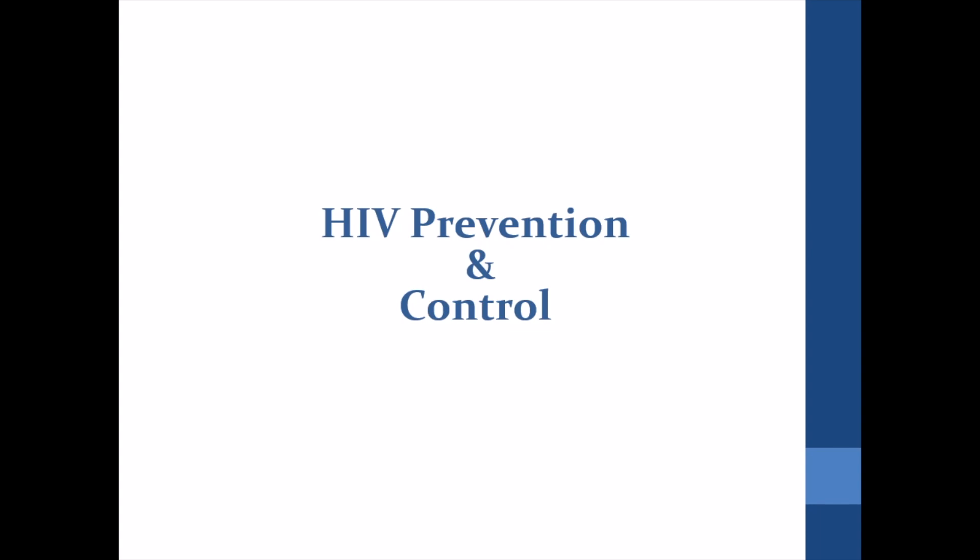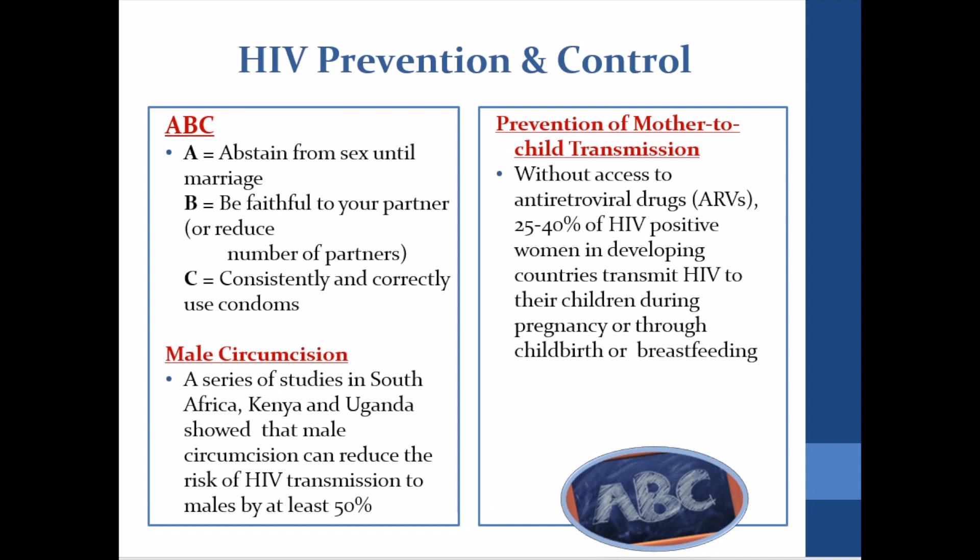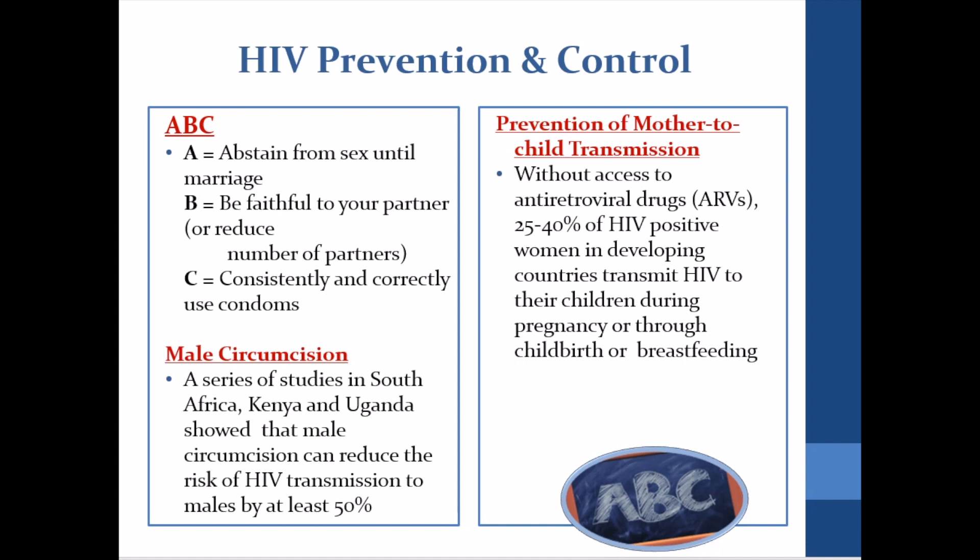HIV prevention and control: since HIV cannot be cured, the best thing is to prevent it. Here are some ways to prevent and control HIV: abstinence, male circumcision, prevention of mother-to-child transmission, prevention education, and voluntary counseling and testing.